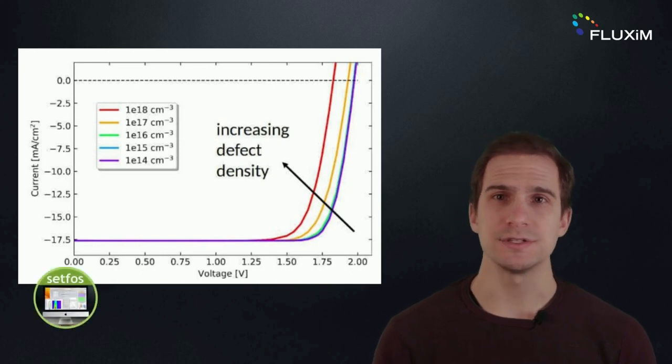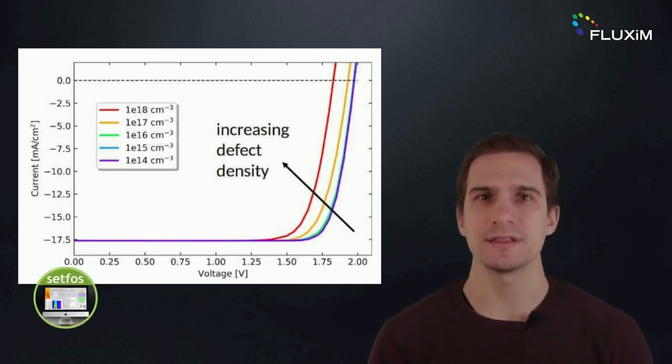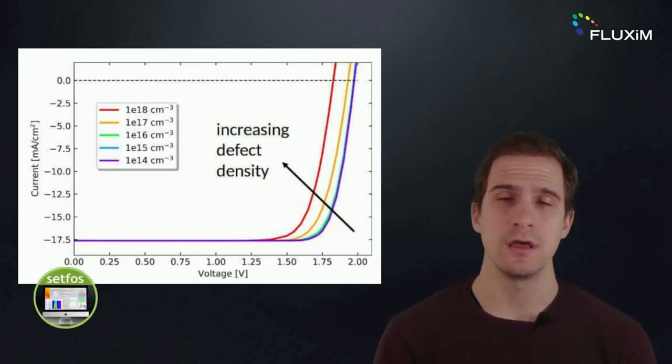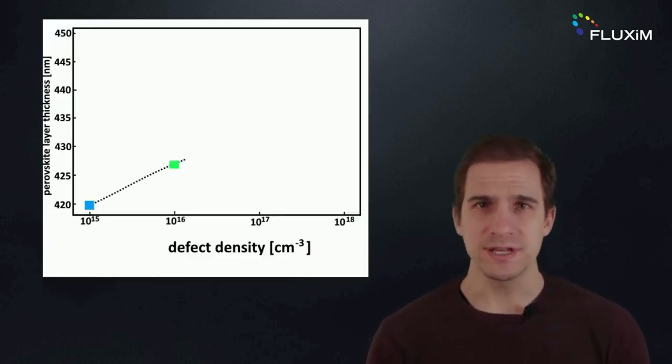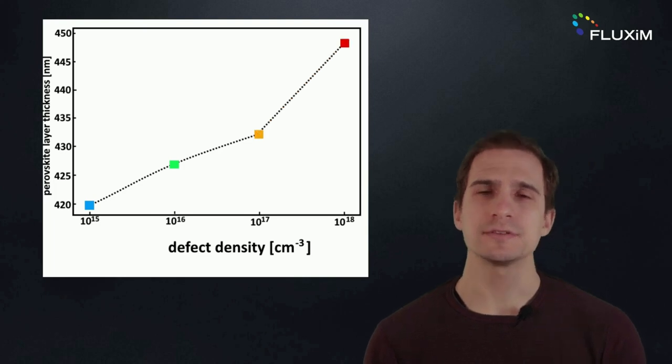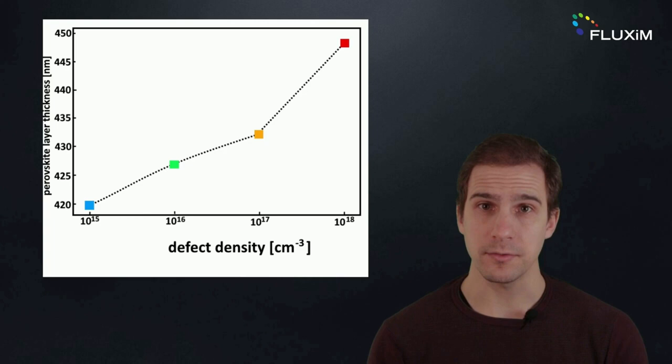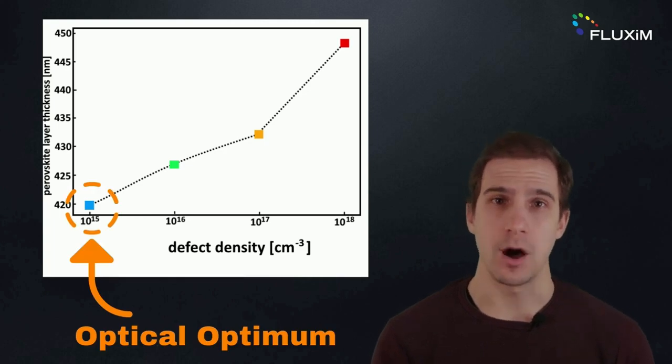Electrical simulations with Setfos show that with increasing defect density at the perovskite interfaces, the open circuit voltage is strongly affected, as expected. To compensate for the loss of carriers, the perovskite thickness should be increased by up to 30 nanometers from the optimum thickness value inferred from optical simulations.